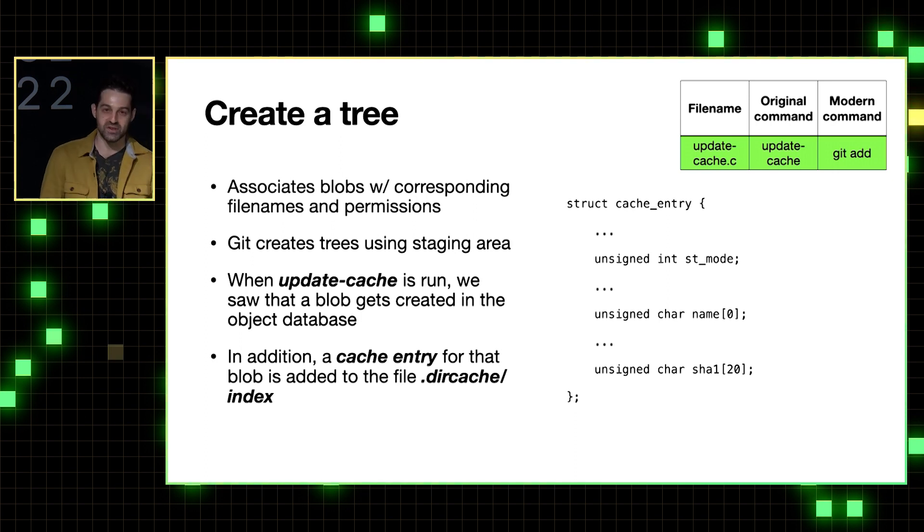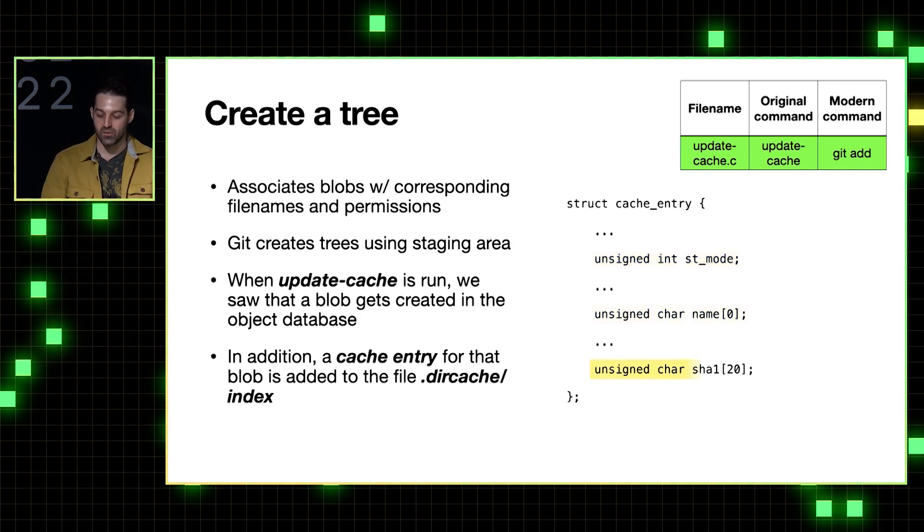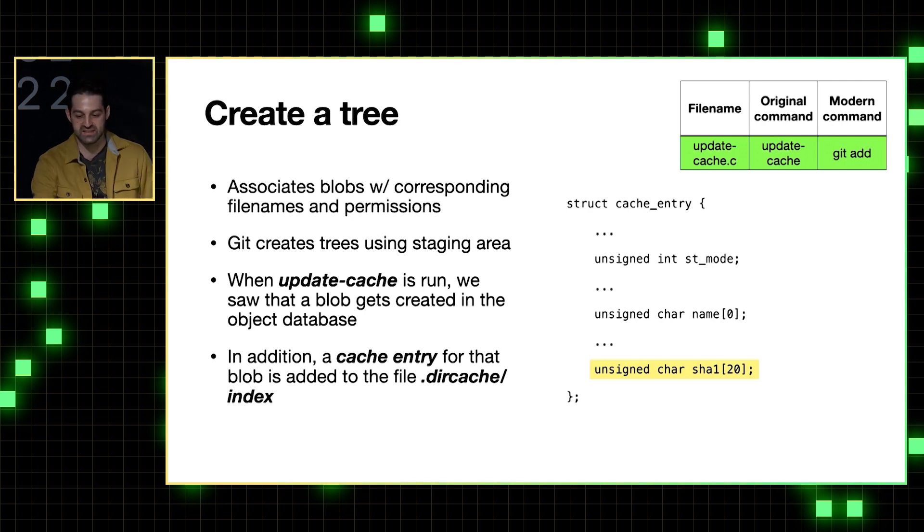And so now let's answer the question, what's a cache entry? From the perspective of Git's code, it's this structure that you see here on the right, starting with a file's mode or permissions, a file's path and name, and SHA1 of the file's blob. And keep this in mind, because this brings us to Git's staging area.